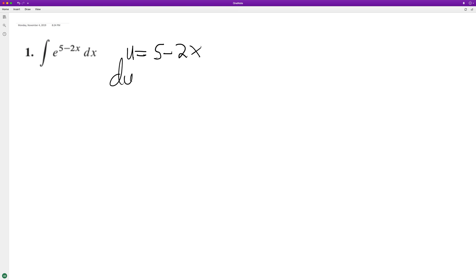Then du, the derivative of that, is equal to negative 2. So we just have dx there. So to get du equal to dx, so negative 2 dx, we need to divide through by negative 2.